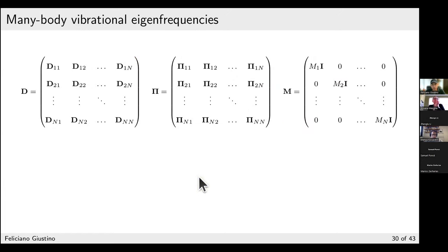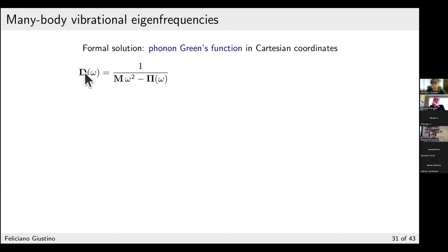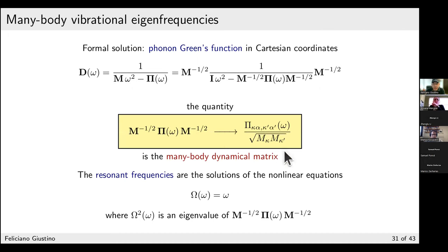In matrix notation, the phonon equation of motion becomes M ω² D = I + Π D, which can be inverted to give a formal solution for the phonon Green's function D. Looking for poles of D gives resonant frequencies — the phonon frequencies. Pulling out the mass matrix yields a many-body dynamical matrix: the phonon self-energy divided by the square root of atomic masses. Diagonalizing this Hermitian matrix gives eigenvalues; setting these equal to ω² gives the poles and thus the phonon dispersion relations.